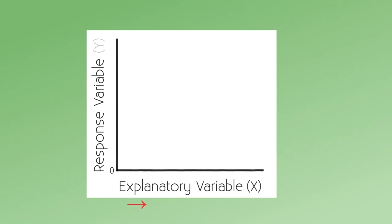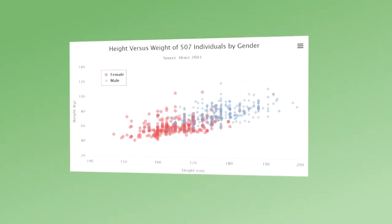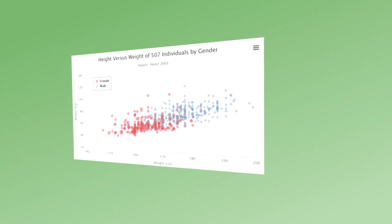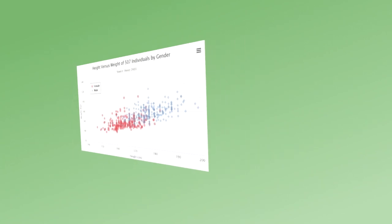How do we examine the association between two variables graphically? When we graph the association between two variables, the independent or explanatory variable is plotted on the x-axis. The dependent or response variable is plotted on the y-axis. This is a most important convention to use when graphing relationships. However, before we actually construct our graph, there are a few questions we need to ask about the types of explanatory and response variables that we'll be working with.